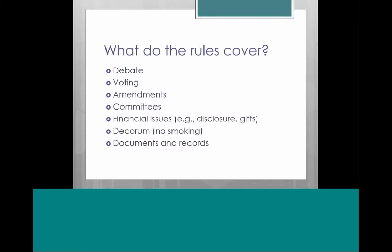What do these rules cover? They cover a lot — how bills are debated, voting, and how amendments can be made. But they also cover things like committee appointments and staff, various financial issues like disclosure and acceptance of gifts, decorum — including things like smoking — and rules dealing with documentation and record keeping.